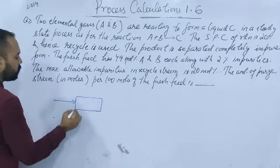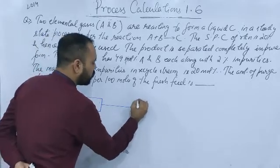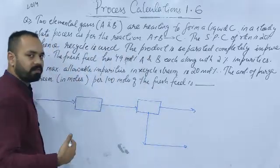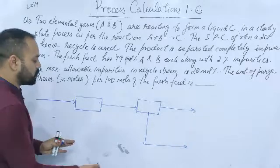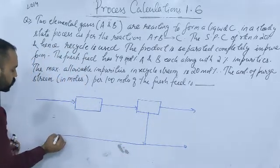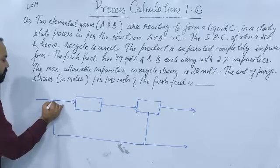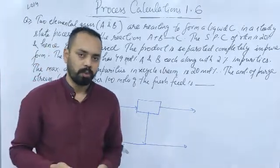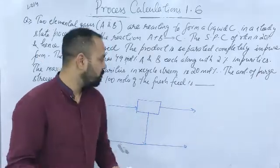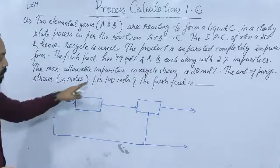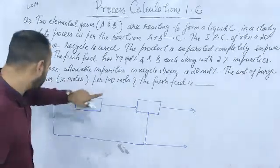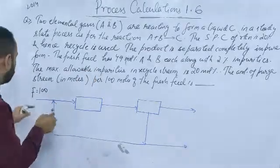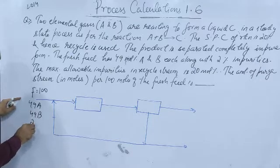The first step for solving this kind of problem is to make the figure and label all information. The figure has: a reactor, the product coming out, a separator, the product stream P coming out of the separator, a recycle stream, and a purge stream. Do not always include a purge stream — only draw it if purging is mentioned in the problem. Since the basis is given as 100 moles of fresh feed, take F = 100, so the fresh feed contains 49 moles of A, 49 moles of B, and 2 moles of inerts.